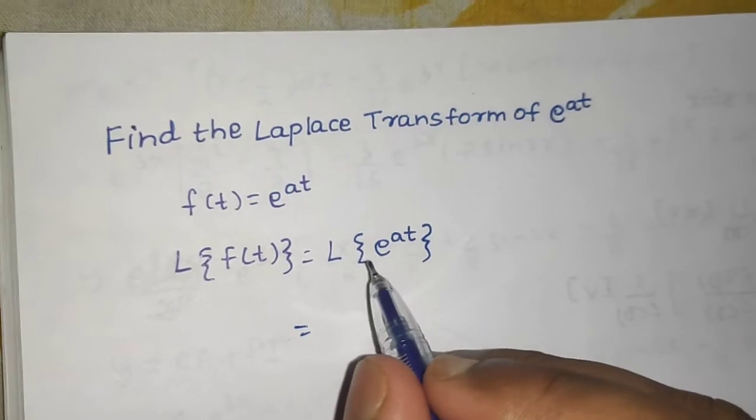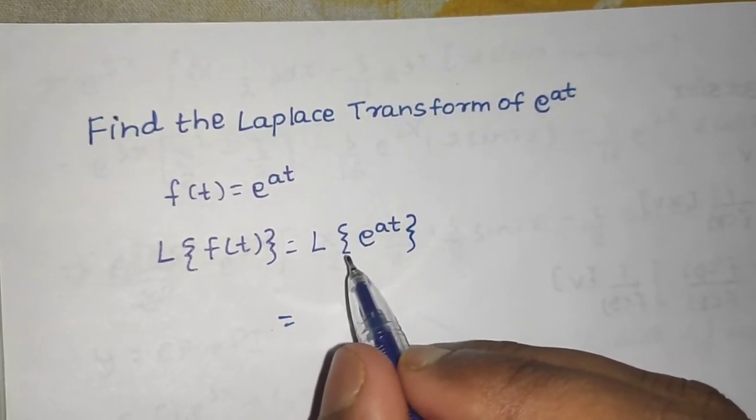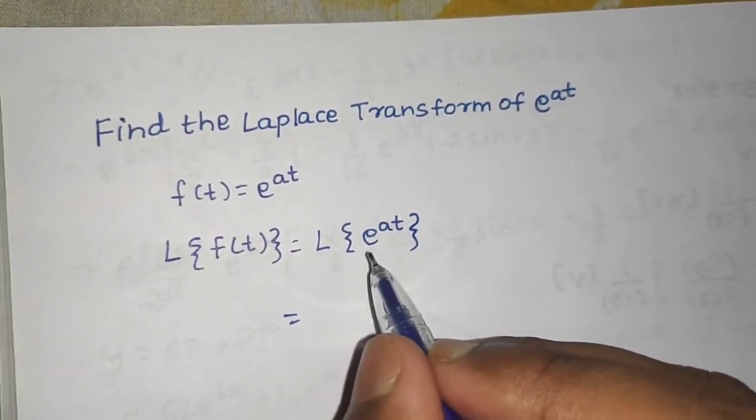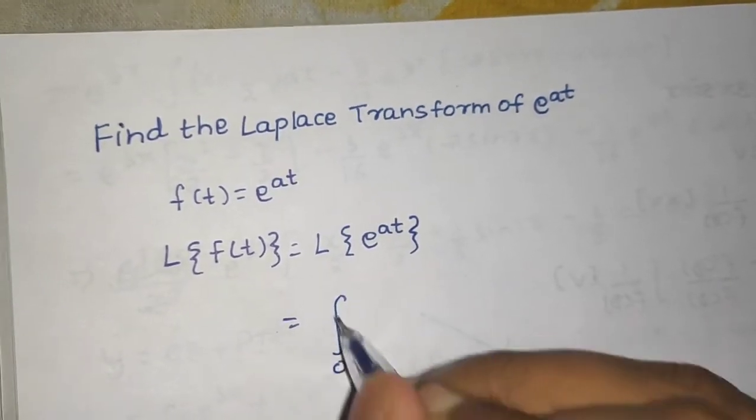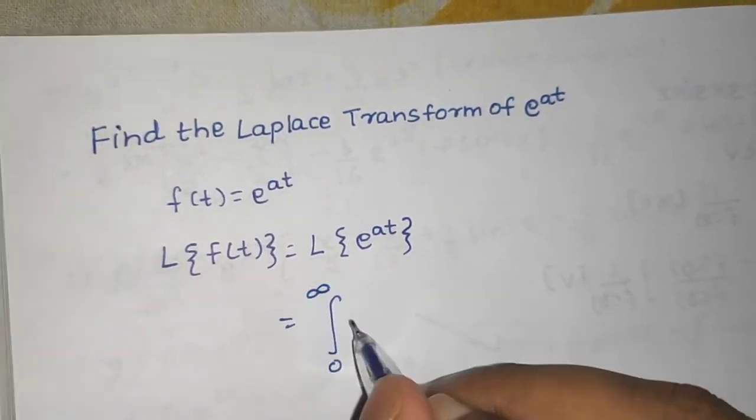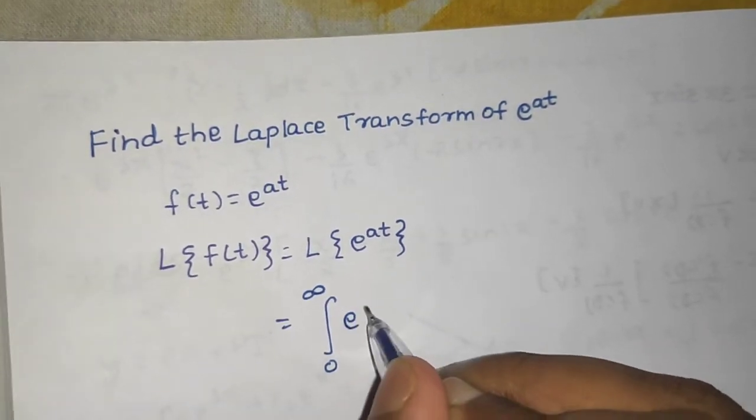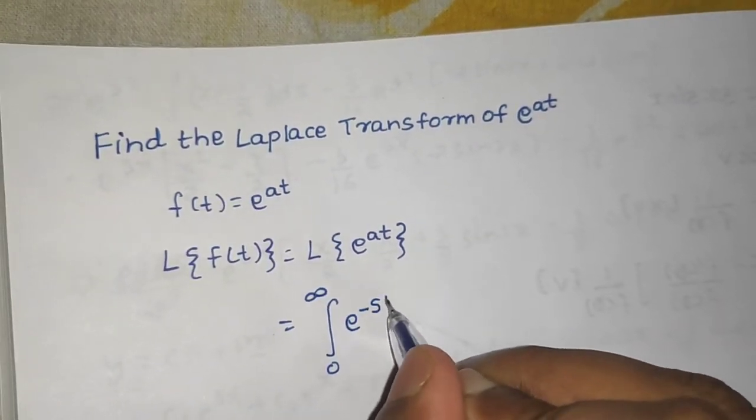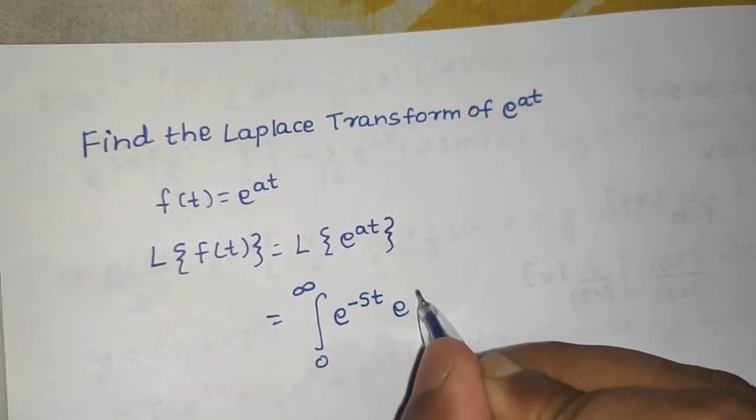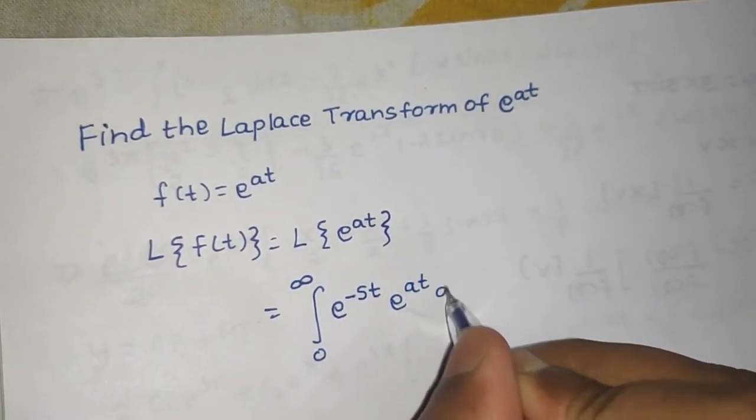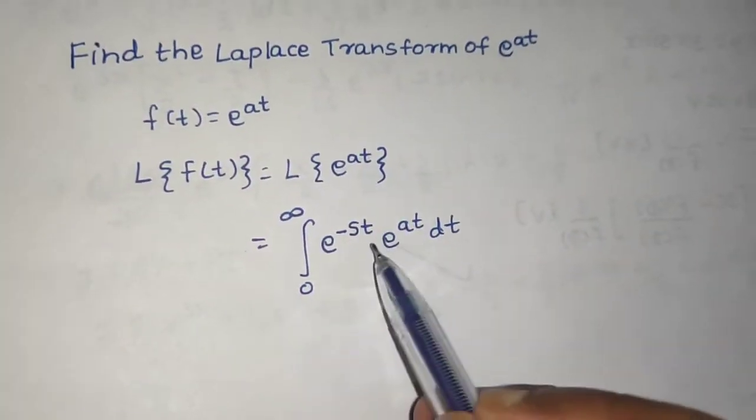Laplace of f of t will be Laplace of e raised to power at. We know the formula of Laplace transform that is 0 to infinity e power minus st into f of t which is here e power at into dt. So, Laplace of this will be like this.